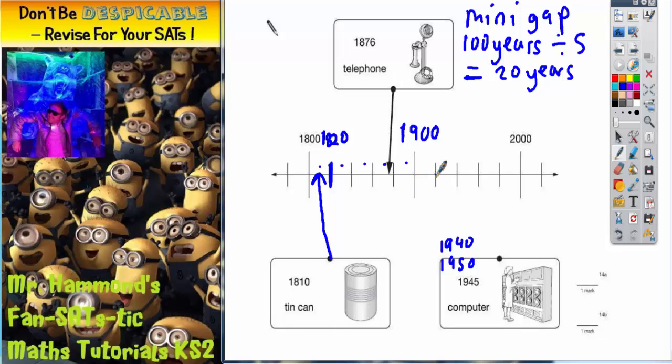Well, this is 1900. So the next mini-gap will be 1920. 1940 would be here. Let's fill that in. The next mini-gap will be 1960. But we need 1950. So 1950 would be between those two. So 1950 would be there.